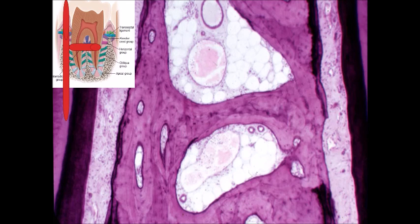Looking at this section, we can see the acellular cementum on both sides, the periodontal ligament on both sides, and the alveolar bone in between. These Haversian and Volkmann canals — what runs inside them? Blood vessels run inside them. This is an artery because it has a thick wall, and vessels which have thin walls are veins. Also I have nerves and nerve bundles.